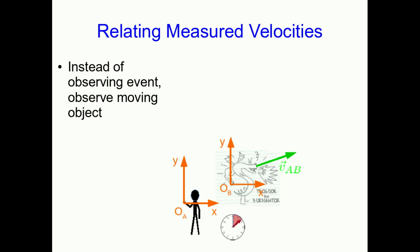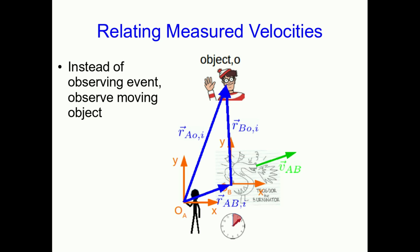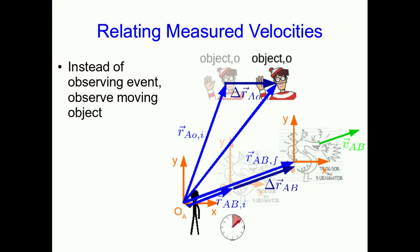Let's move on from how positions transform to look at how velocities transform, which will allow us to reproduce what we had in the previous lectures. And so we need to track something that's moving, so instead of you and Trogdor observing an event, you're now observing some moving object and you want to keep track of where that object is. So of course you each measure its position, and we already know how the position you measure and the position that Trogdor measures at this initial time are related. And now at some later time relative to you, the object and Trogdor have both moved. We could of course look from Trogdor's point of view too. First thing to notice is that there are a heck of a lot of vectors on this diagram and it's getting a little confusing.